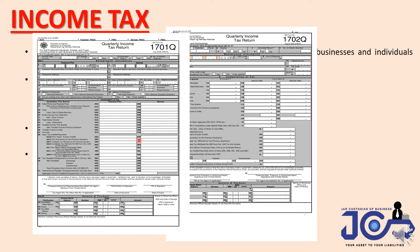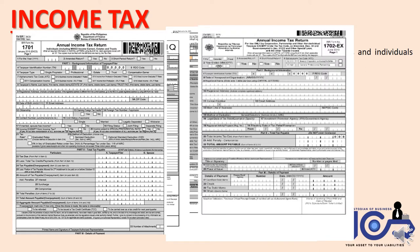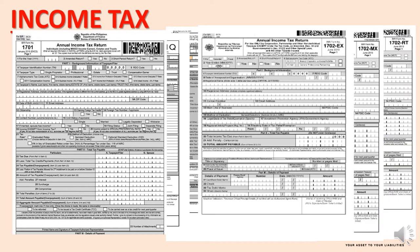For annual income tax filing, we use 1701 for sole proprietorship, and for partnerships and corporations there are three forms: 1702-EX, 1702-MX, and 1702-RT. I won't discuss the differences today, since our focus is the common tax activities of a non-VAT business.